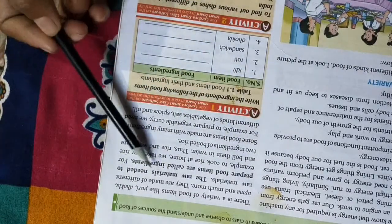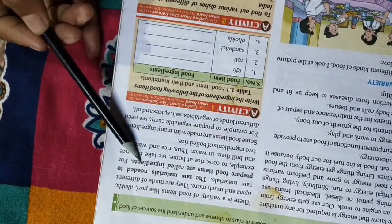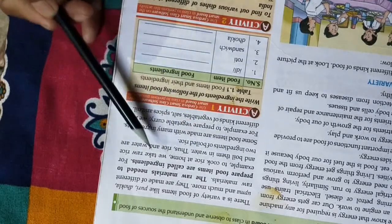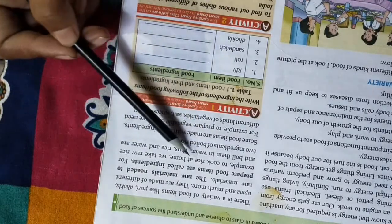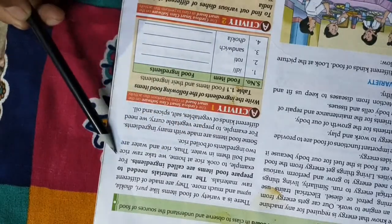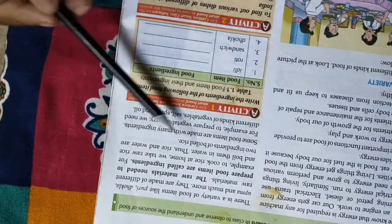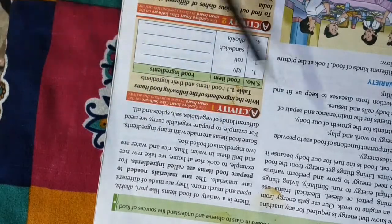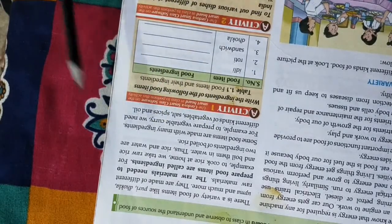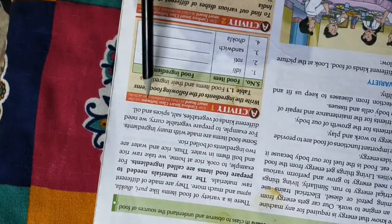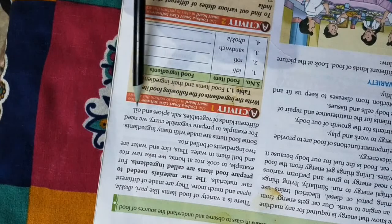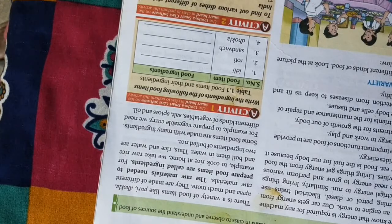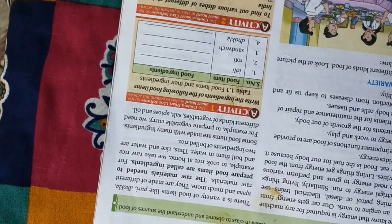The raw materials needed to prepare food items are called ingredients. For example, to cook rice at home, we take raw rice and boil them in water. Some food items are made with many ingredients. For example, to prepare vegetable curry, we need different kinds of vegetables, salt, spices, and oil.